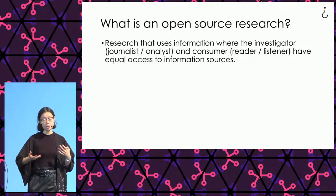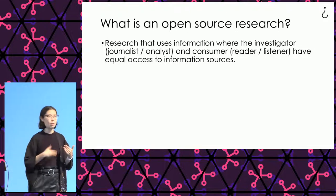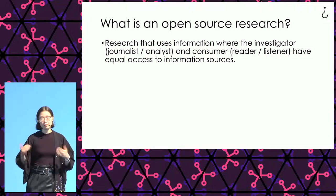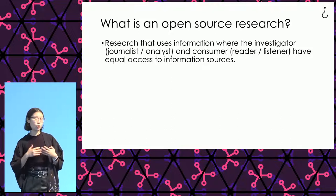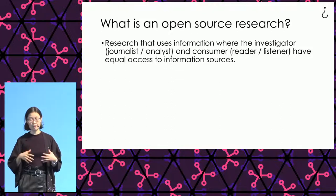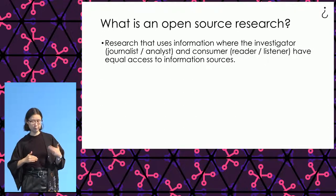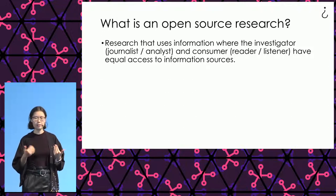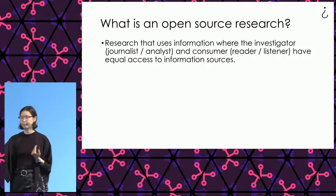In traditional journalism, journalists might do a field trip, might do an interview, or have some sources they can reach out to. But in open source investigation, researchers are doing everything at their laptops and searching for information that's available publicly. So theoretically, if I do an investigation, you would be able to do the same thing and reiterate each step.